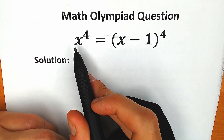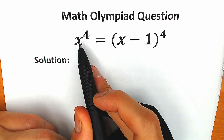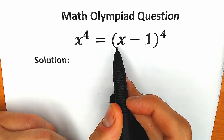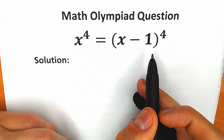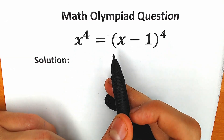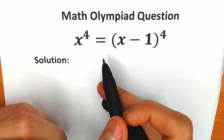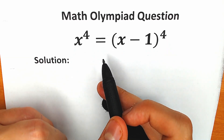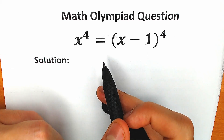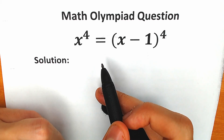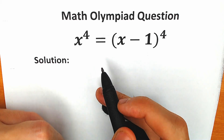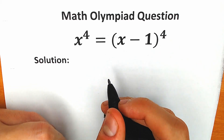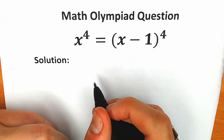Today we have a very interesting equation: x to the power 4 equal to x minus 1 to the power 4, and we need to solve this for x. If you have your solution, you can write it in the comments below and we will check our answer. It will be really interesting.